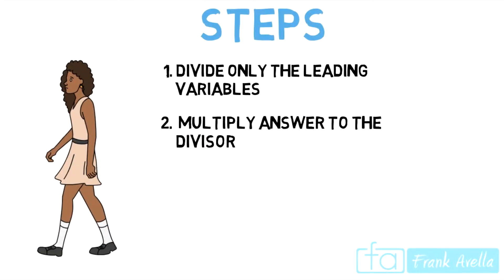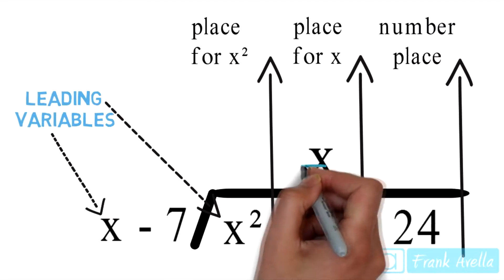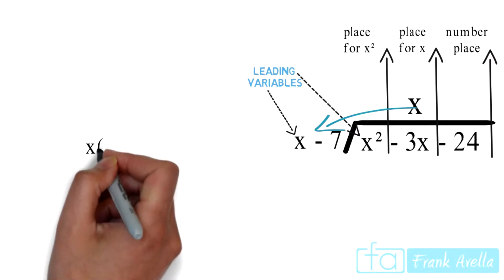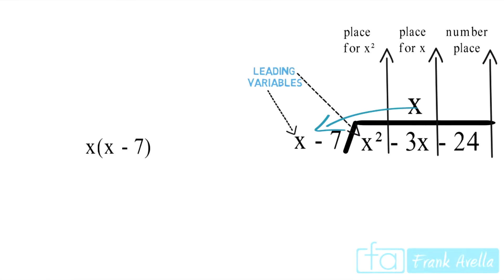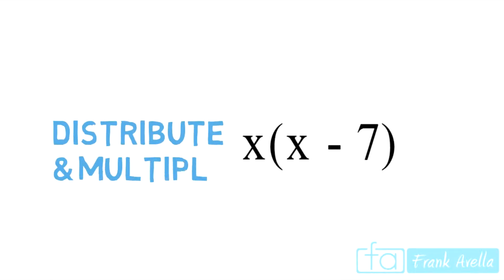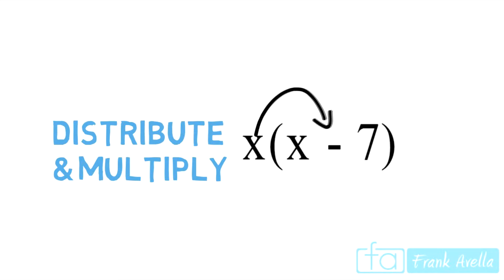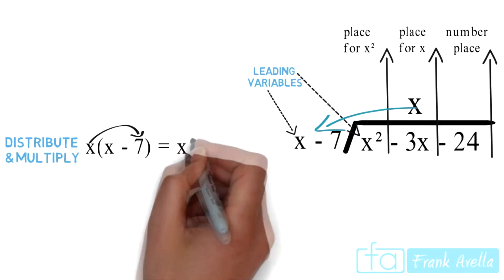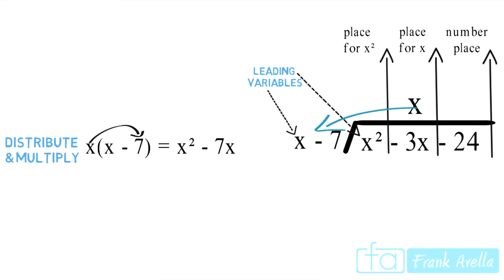Step 2 states: multiply the answer to the divisor. Our answer was x, so we take that x and multiply it by x minus 7. Distributing, we get x times x and x times negative 7, which leaves us with x squared minus 7x.